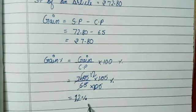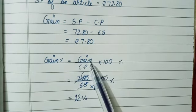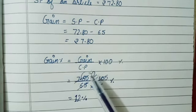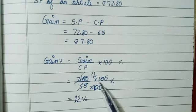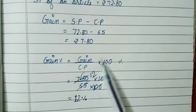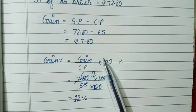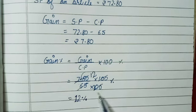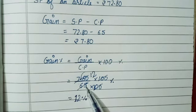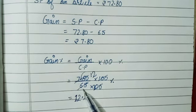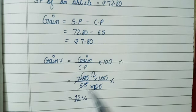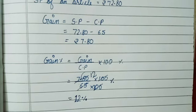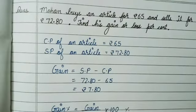Put in the values and simplify. Gain was 7.80 and CP is 65, multiplied by 100. Remove the decimal and put two zeros in the denominator; the 100s cancel. Then divide by 65, and we get a gain percent of 12. So 12 percent is our answer.